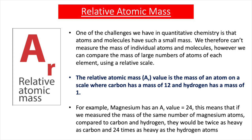Magnesium has an AR value of 24. This means that if we measured the mass of the same number of magnesium atoms compared to carbon and hydrogen, they would be twice as heavy as carbon and 24 times as heavy as hydrogen atoms. This is because the AR value of magnesium is 24, the AR value of hydrogen is 1, and the AR value of carbon is 12.